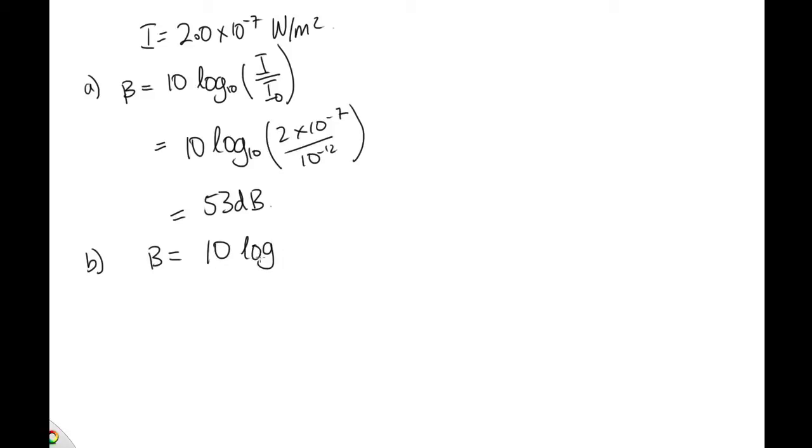So we've got 10 log to the base 10 of 2 times 2 times 10 to the minus 7 over 10 to the minus 12. So solving that on the calculator, we get 56 decibels. So even though we've doubled the intensity, we've only increased the sound level by 3 decibels.